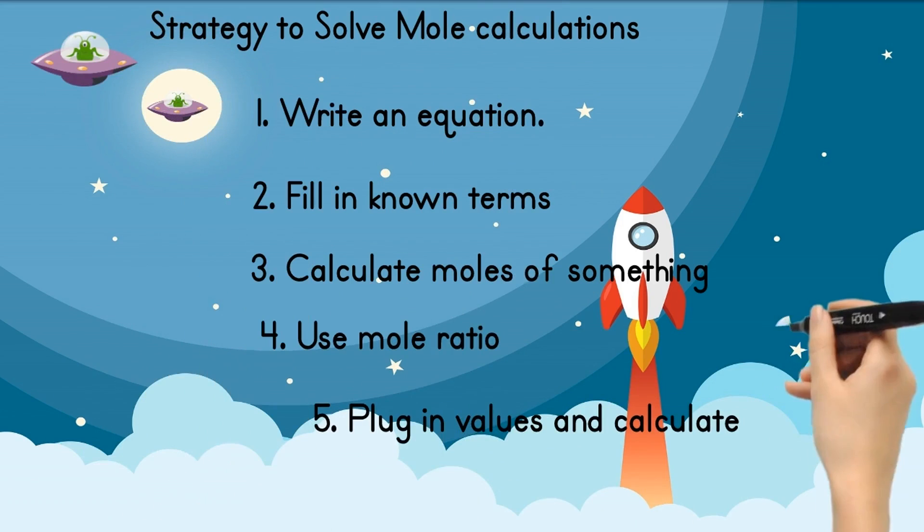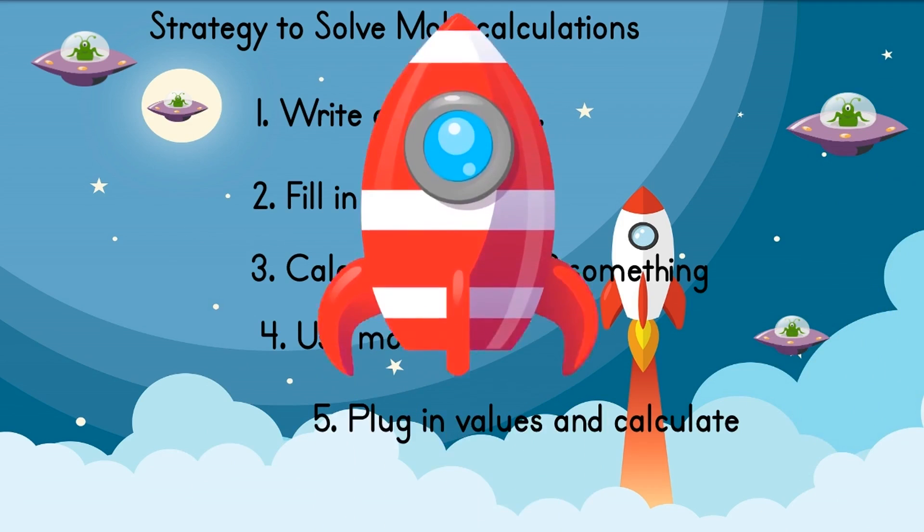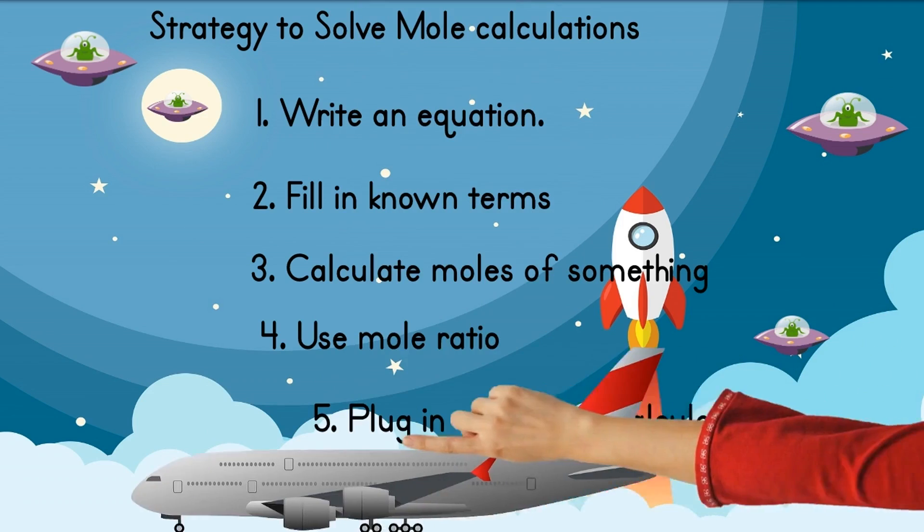The fourth stage is to use mole ratios, also known as stoichiometric coefficients, to calculate the unknown moles you need. Finally, plug in values and calculate with units.